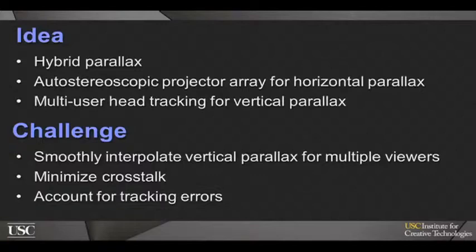Now the challenge here is that we only have these sparse tracked viewers and we want to interpolate a continuous estimate of viewer height across all directions. Secondly, we have to deal with the fact that tracking systems tend to have a lot of errors. They have a lot of latency and they also are fairly inaccurate. So our system needs to be able to handle all of this in a way that reduces crosstalk.